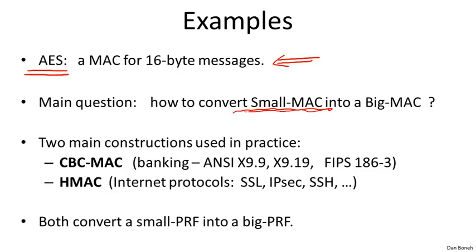Now the question is: if we have a PRF for small inputs like AES, which only acts on 16 bytes, can we build a MAC for big messages that can act on gigabytes of data? I sometimes call this the McDonald's problem — given a small MAC, can we build a big MAC out of it? In other words, given a MAC for small messages, can we build a MAC for large messages? We're going to look at two constructions. The first is called a CBC-MAC, which takes a PRF for small messages and produces a PRF for very large messages. The second is HMAC, which does the same thing.